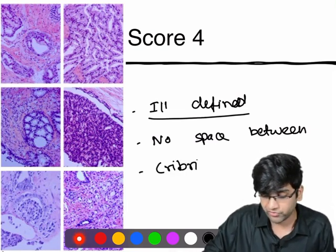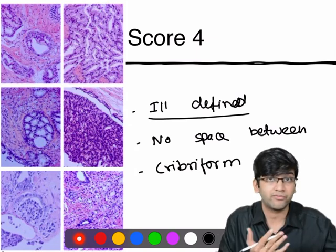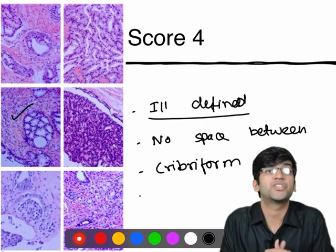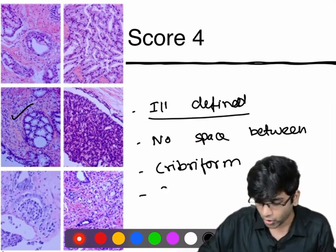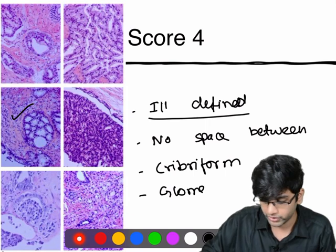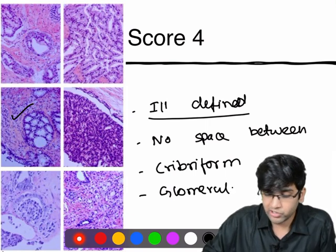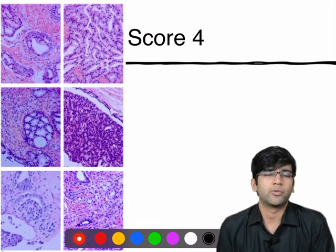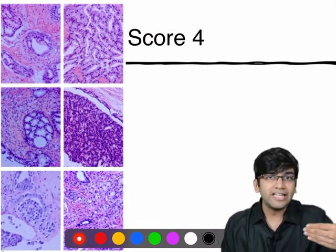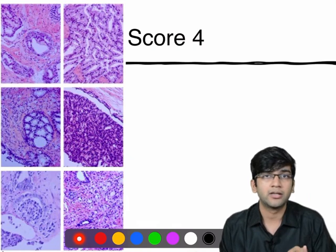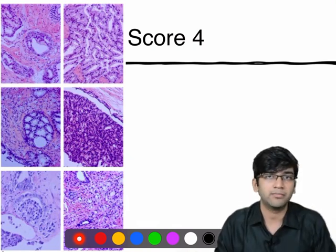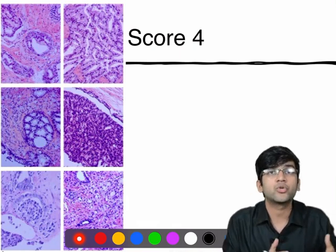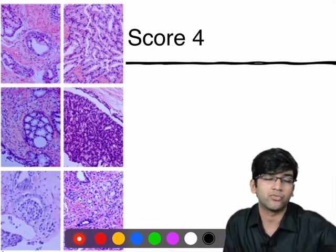Two more features for score four: when I see a cribriform pattern — it looks like Swiss cheese with holes in between — that is a cribriform pattern. Or if I see a glomeruloid pattern, where when I circle something it looks like a glomerulus. So ill-defined gland formation without a lumen, or well-defined glands with no space between them, a cribriform pattern or glomeruloid pattern — when a pathologist sees any of these in microscopy, I give a score pattern of four.